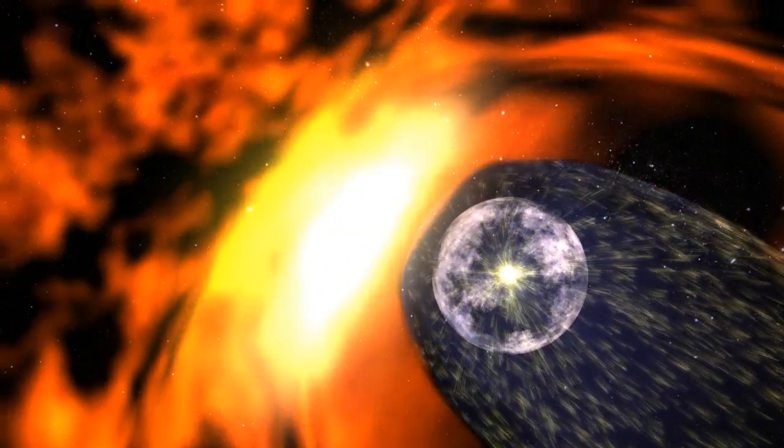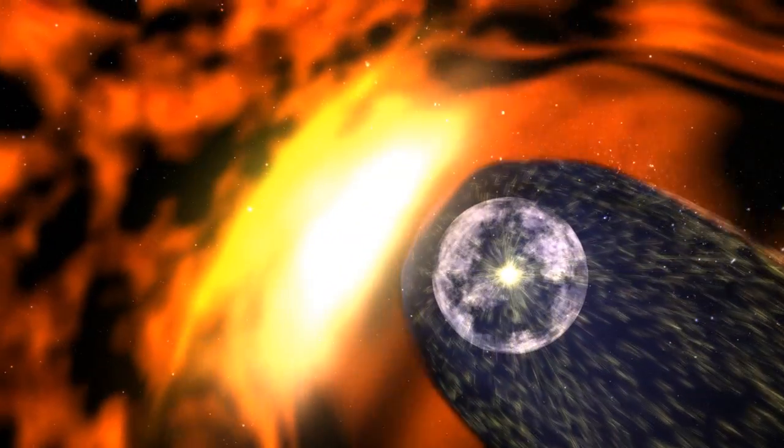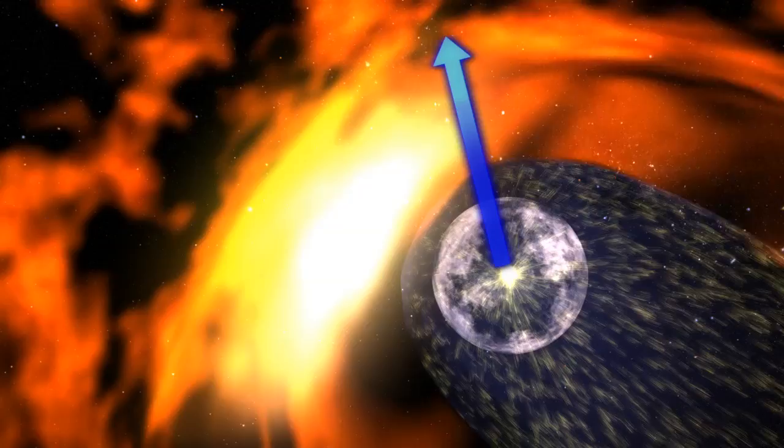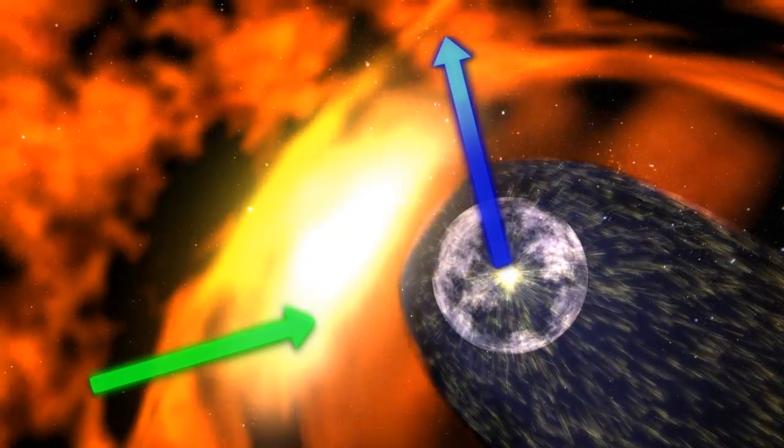Like a bicycle traveling in a crosswind, the wind that the solar system feels is actually a combination of the solar system's movement relative to the galaxy and the movement of the interstellar medium itself.